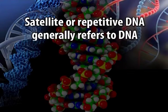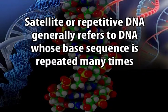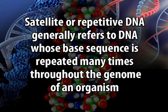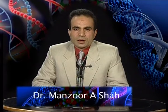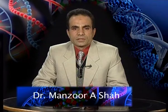Satellite or repetitive DNA generally refers to DNA whose base sequence is repeated many times throughout the genome of an organism. It's very common in eukaryotes, accounting for about half of the total DNA, for example in the case of mammals. Its proportion also varies in different organisms and can be divided on the basis of certain characteristics into various types.